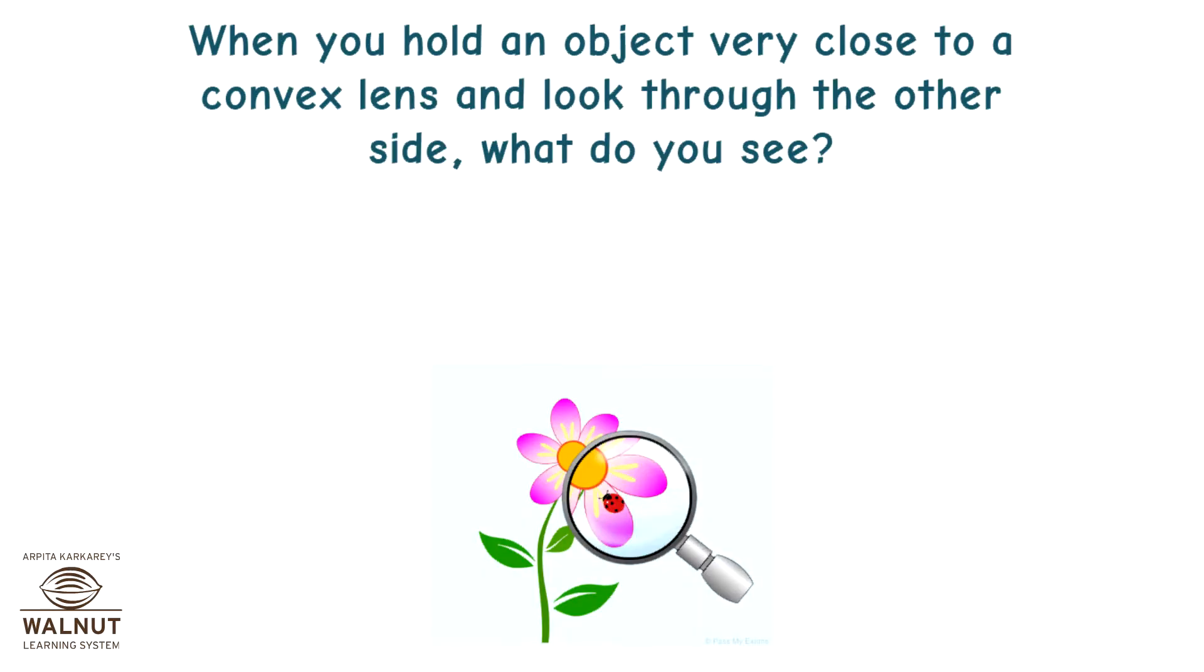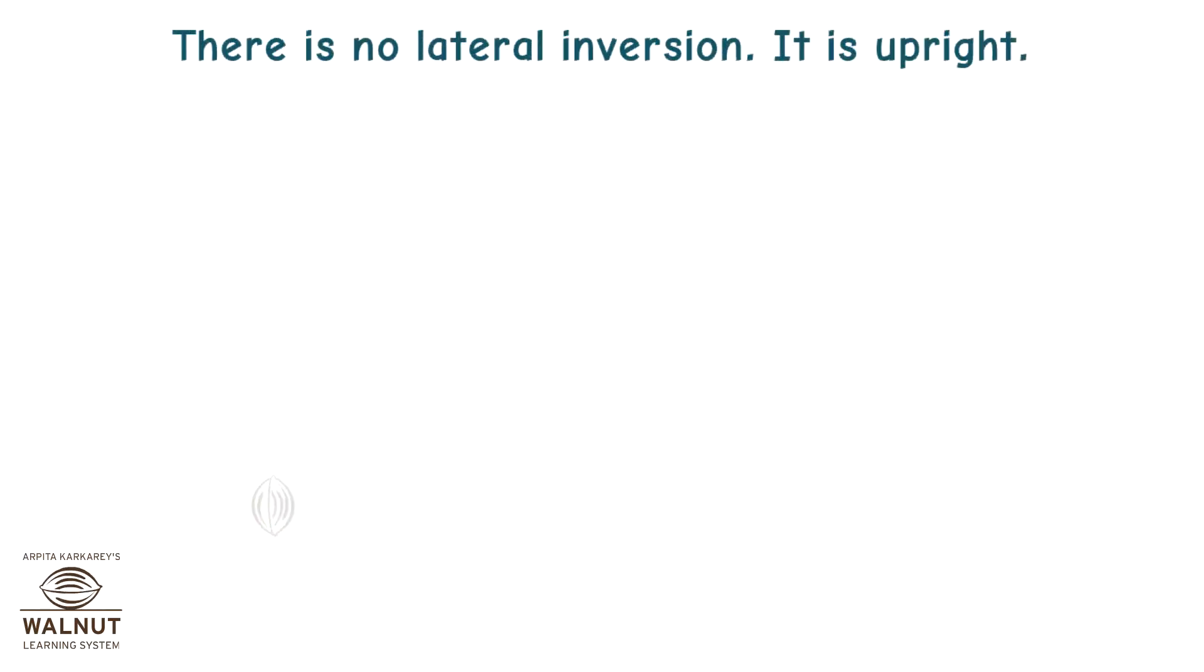When you hold an object very close to a convex lens and look through the other side, what do you see? You see a magnified image of the same object. There is no lateral inversion. It is upright. Is it real or virtual? It is virtual.